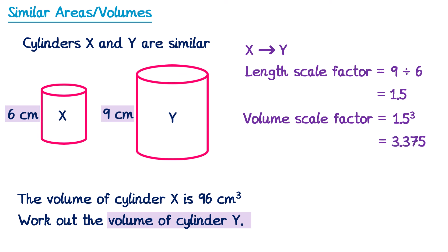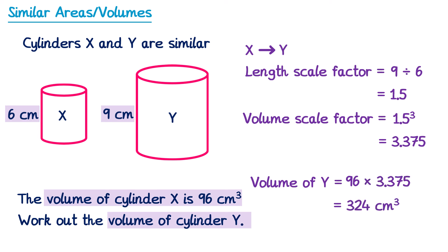The volume scale factor is 1.5 cubed — if you cube 1.5 you get 3.375. So the volume of shape Y must be 3.375 times bigger than the volume of shape X. The volume of X is 96cm cubed, so the volume of Y is 96 multiplied by 3.375 — using a calculator, that's 324.